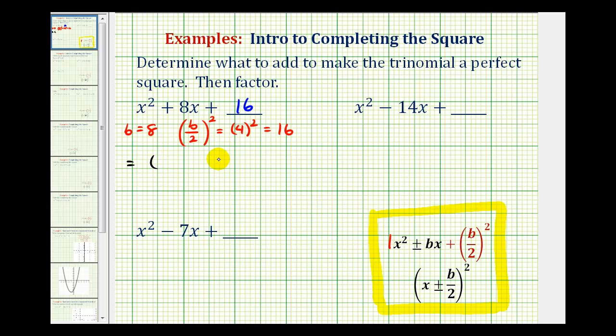And let's verify this by factoring. So this will factor into two binomial factors. The first terms must come from the factors of x squared, which would be x and x. And now we want the factors of positive 16 that add to positive eight, which happen to be positive four and positive four. So we have plus four here and plus four here. Notice how we have two equal binomial factors, which makes this a perfect square trinomial. And we can write this as the quantity x plus four squared.